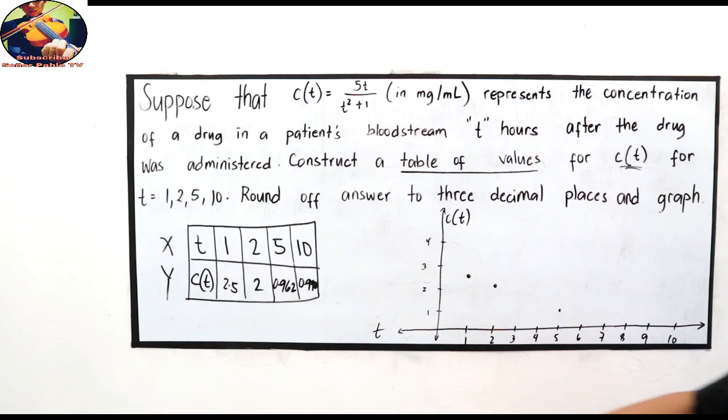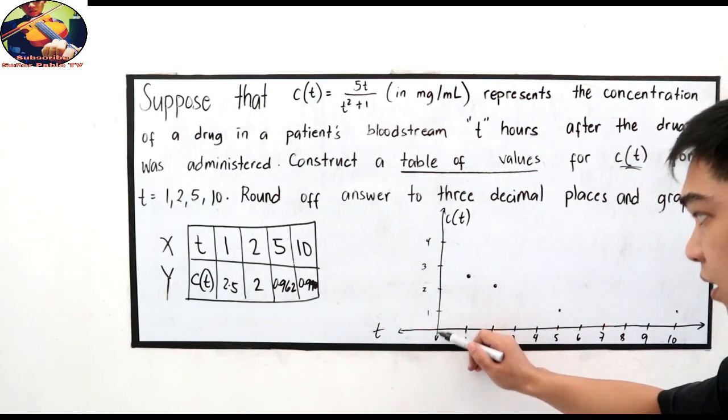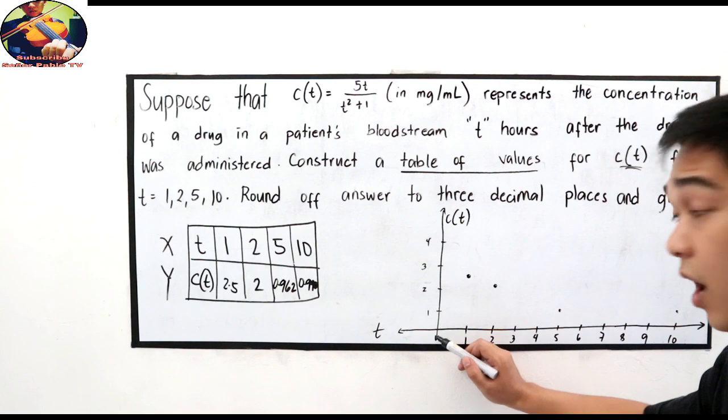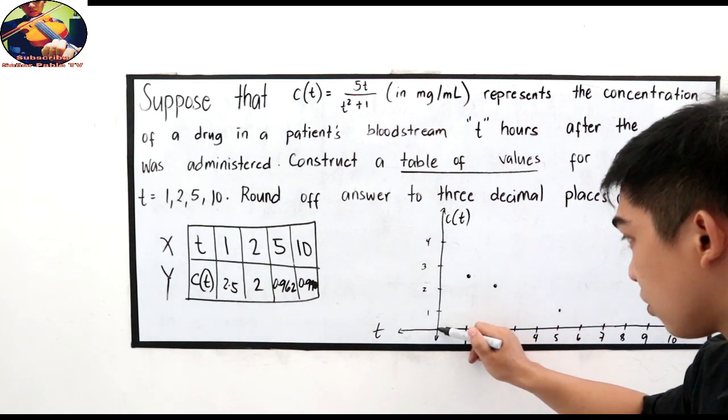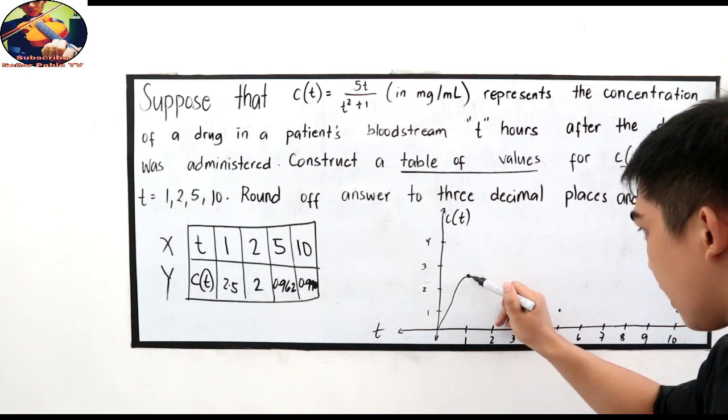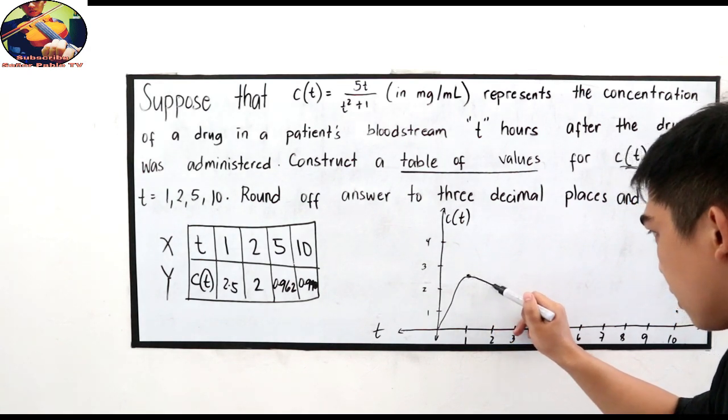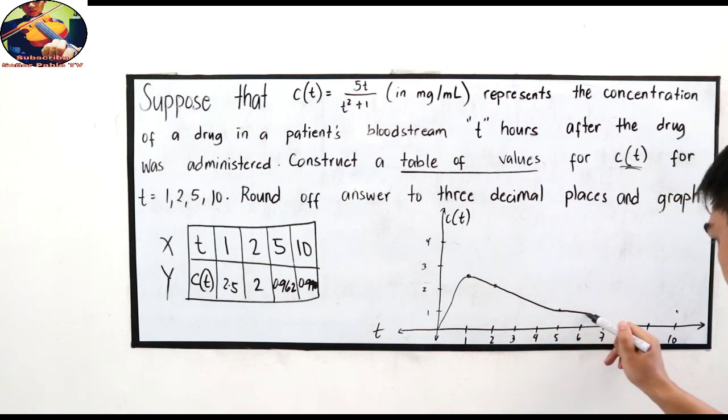Kapag meron tayong ten, bago din mag one. Ayan ngayon yung ating points. Then kukonect na natin. Start tayo sa zero, kasi kapag di siya nag-take, o zero hour tayo, wala pa siyang time na iti-take. Going sa ating first point, and then sa second point, then sa third point, and papunta tayo sa last point.